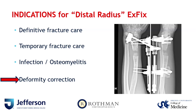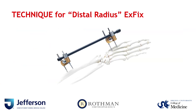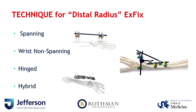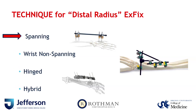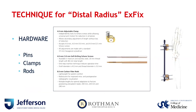There are still a lot of indications depending on the circumstance. Regarding techniques for distal radius external fixation, it's important to know the different types. Broadly, you can categorize techniques into a few: spanning — which crosses the wrist joint itself; non-spanning — which doesn't cross the wrist joint; a hinged fixator — which crosses the joint but allows motion; or some kind of hybrid construct. I'm going to focus on spanning for distal radius fractures.